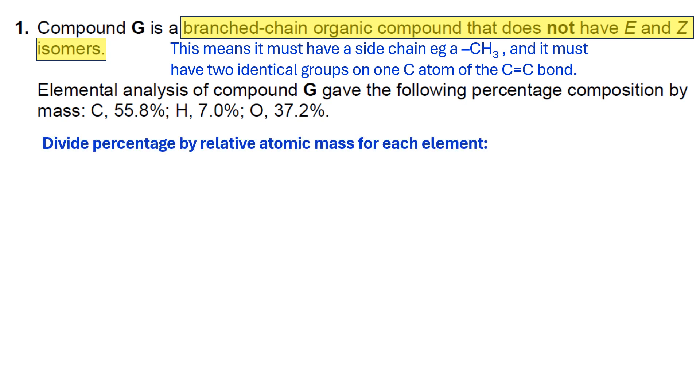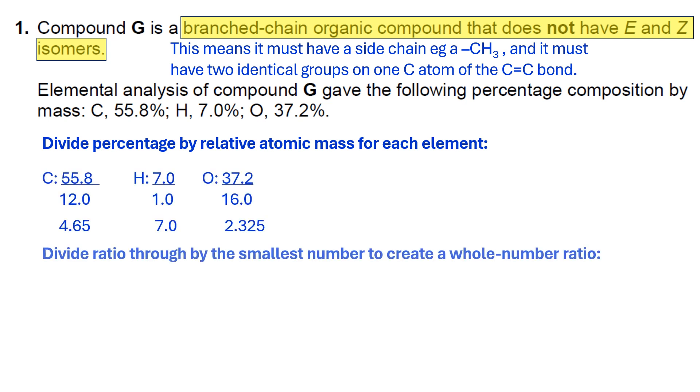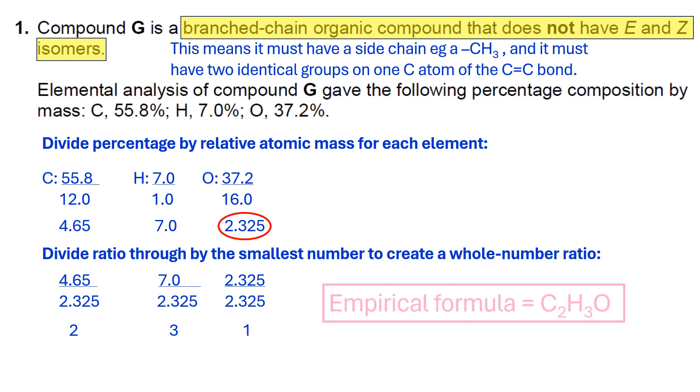The first thing is to divide the percentage by relative atomic mass for each element, which gives us these values. Obviously they're not whole numbers. To convert them into whole numbers, you divide the ratio through by the smallest number. That gives us two, three, and one. So our conclusion is the empirical formula is C2H3O.